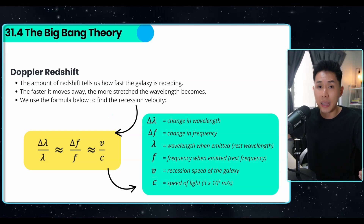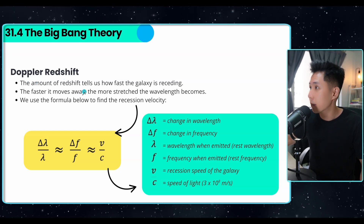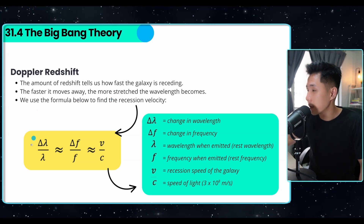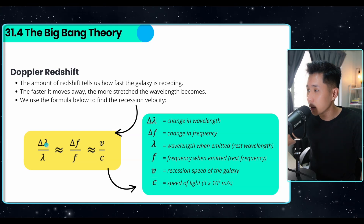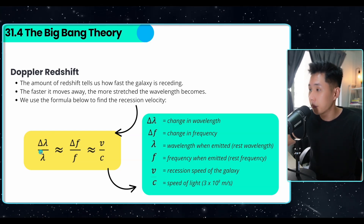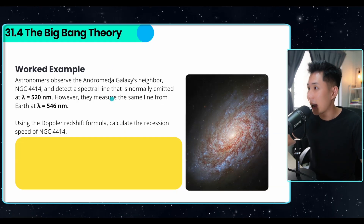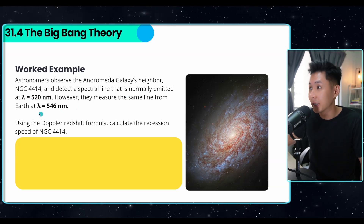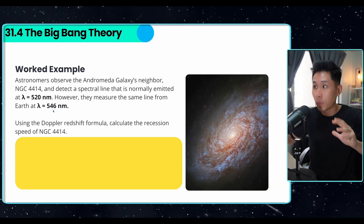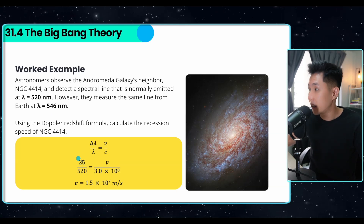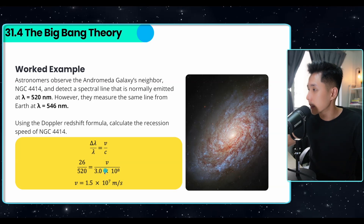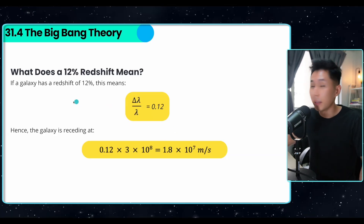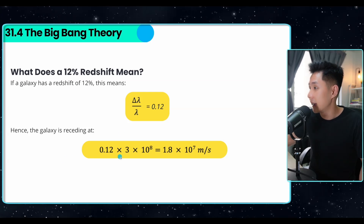Sometimes we need to quantify how much a galaxy is moving away — that's where the Doppler red shift formula comes in. The amount of red shift tells us how fast the galaxy is receding. We use the formula: Δλ/λ = v/c, where you can use either wavelength or frequency. For example, astronomers observing NGC 4414 detected a spectral line normally emitted at 520 nm but measured at a shifted wavelength — a difference of 26 nm. Using 26/520 multiplied by the speed of light gives the recession speed of NGC 4414.